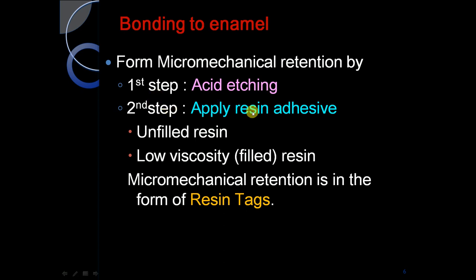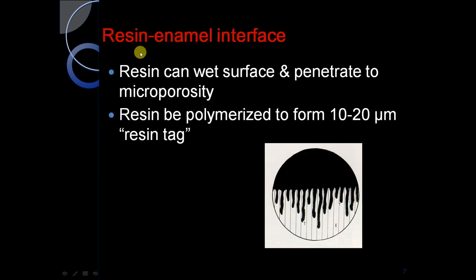Bonding to enamel occurs through micro-mechanical retention in certain steps: step one is acid etching, step two is application of a resin adhesive which is an unfilled resin or low viscosity filled resin. The micro-mechanical retention is in the form of resin tags. The resin can wet the surface and penetrate into the micro-porosity.